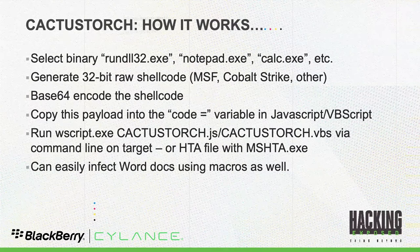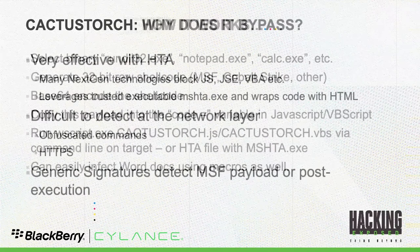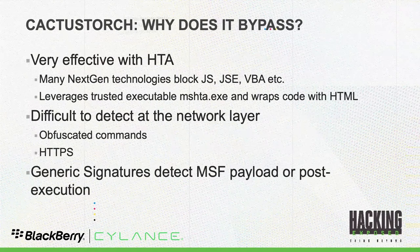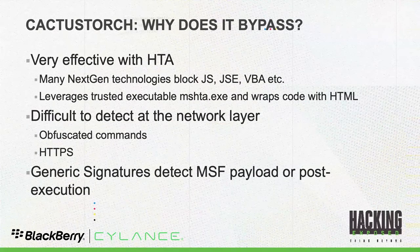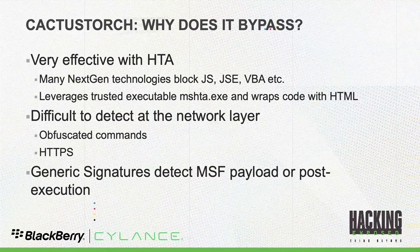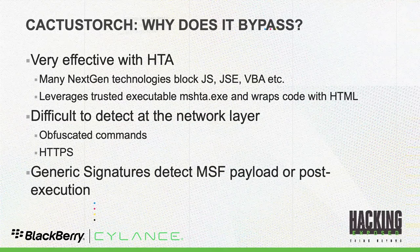What Cactus Torch really does is it allows you to choose a binary — any binary already on the system, like rundll32 as an example. You build some shellcode, you base64 encode it so the shellcode is less detectable by static rules engines, and you then deliver it into a file. We're going to use HTA, which is going to use MSHTA to execute that shellcode. Because MSHTA is a trusted Microsoft application, as is rundll32, the HTA executes. Why does this bypass next-gen? The technologies are really designed to block JavaScript or VBScript or PowerShell and other scripting languages, which is why using HTA is specifically very good at doing a bypass.